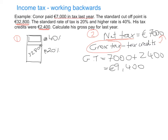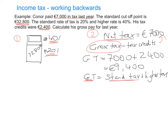The gross tax of €9,400 is made up of the tax paid at the lower rate of 20% plus the tax paid at the higher rate of 40%. I can calculate the lower standard rate of tax straight away. So gross tax equals standard tax plus higher tax, and we know gross tax is €9,400. Step three: we calculate how much standard tax this person paid by finding 20% of €32,800, which gives us €6,560.